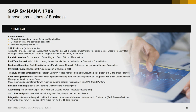Second, enhancements to the central finance concept. With central finance, you can transition to SAP S4HANA without disruption to your current financial system landscape, which can be made up of a combination of SAP and non-SAP systems and different accounting approaches. This allows you to create a common reporting structure. With 1709, central finance is enhanced with capabilities like shared services in accounts payable, accounts receivable, reversal and correction capabilities, and some financial reporting scenarios.